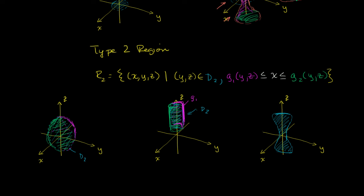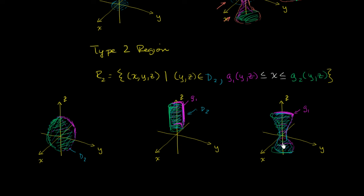The lower bound on x, G1, could be a surface — a function of y and z — that is the backside of our hourglass. And then G2 could be the front side of the hourglass. So the hourglass, oriented the way it is, would actually be a type 2 region.